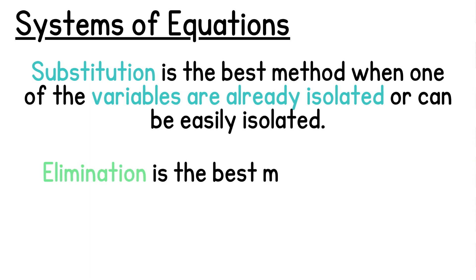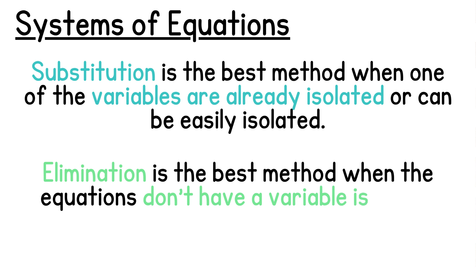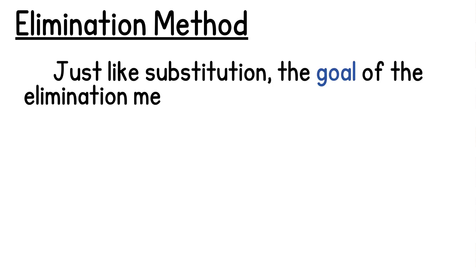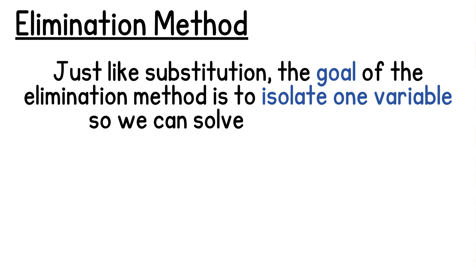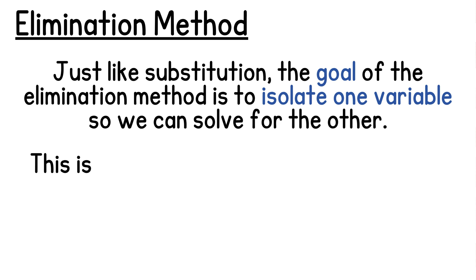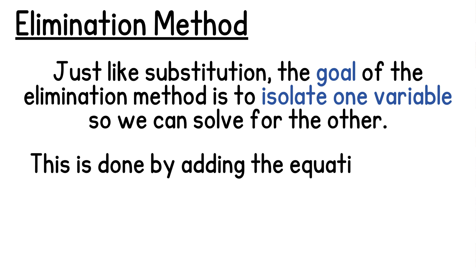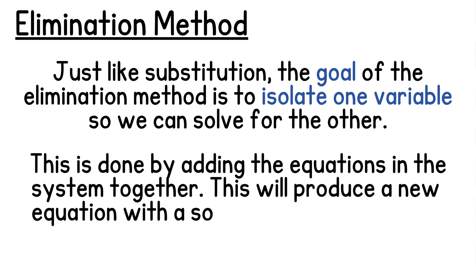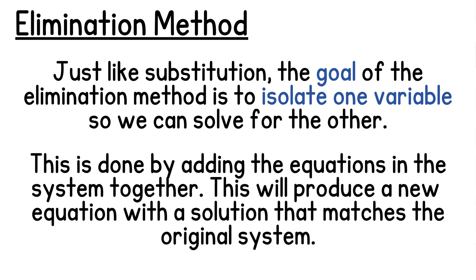Elimination is the best method when the equations don't have a variable isolated. Just like substitution, the goal of the elimination method is to isolate one variable so that we can solve for the other. This is done by adding the equations in the system together, which will produce a new equation with a solution that matches our original system.